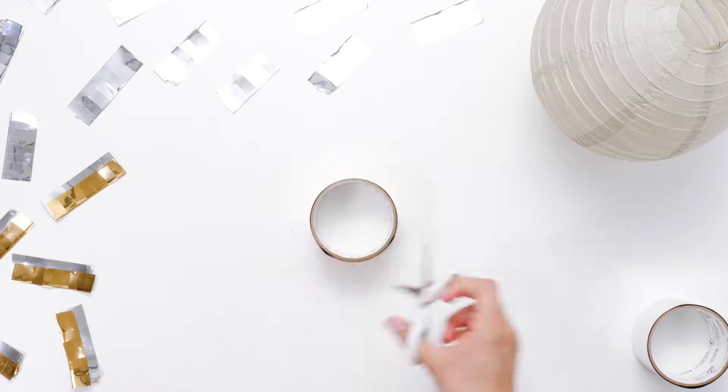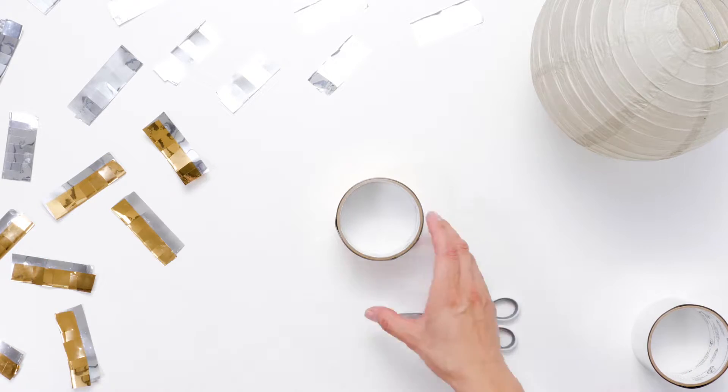Take the prepared tape strips and apply them to the exterior of the lantern, starting from the bottom.